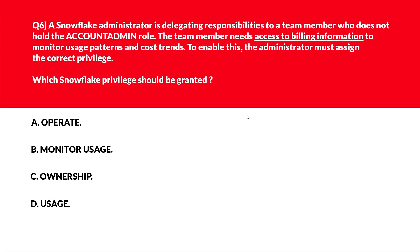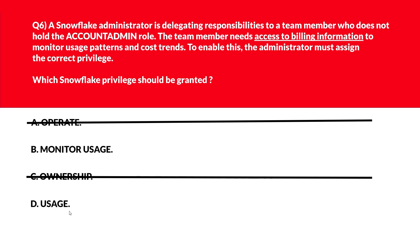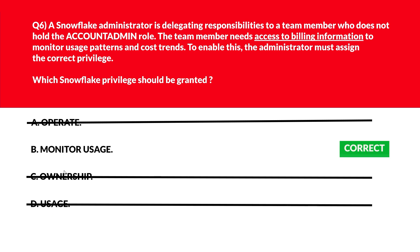Option A says operate — operate controls execution, not billing visibility, incorrect. Option B says monitor usage — monitor usage grants access to billing information, let's keep it. Option C says ownership — ownership is excessive for usage monitoring, wrong. Option D says usage — usage enables object access, not billing metrics, eliminated. We'll lock option B, monitor usage, as the right answer.